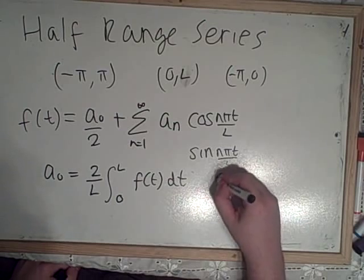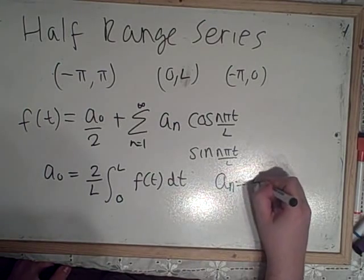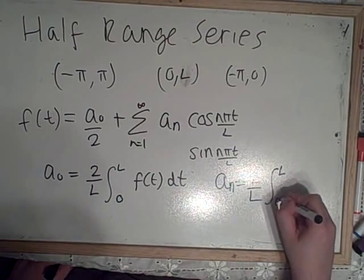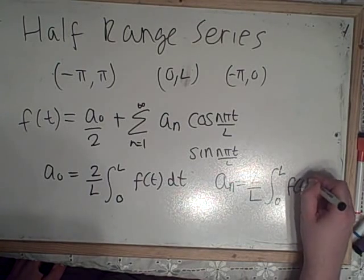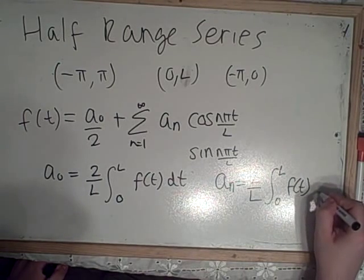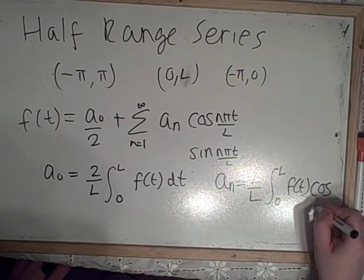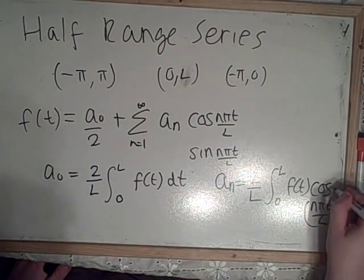a n—this is equal to 2 over l, again, because it's a half range, from 0 to l, our limit, f of t, and this would be cosine n pi t over l, and this is all in the bracket for this cosine.